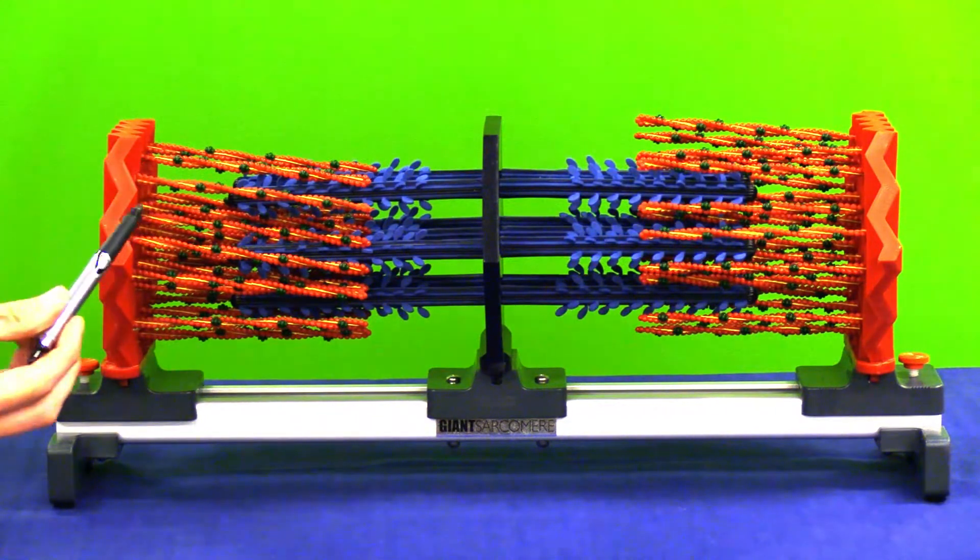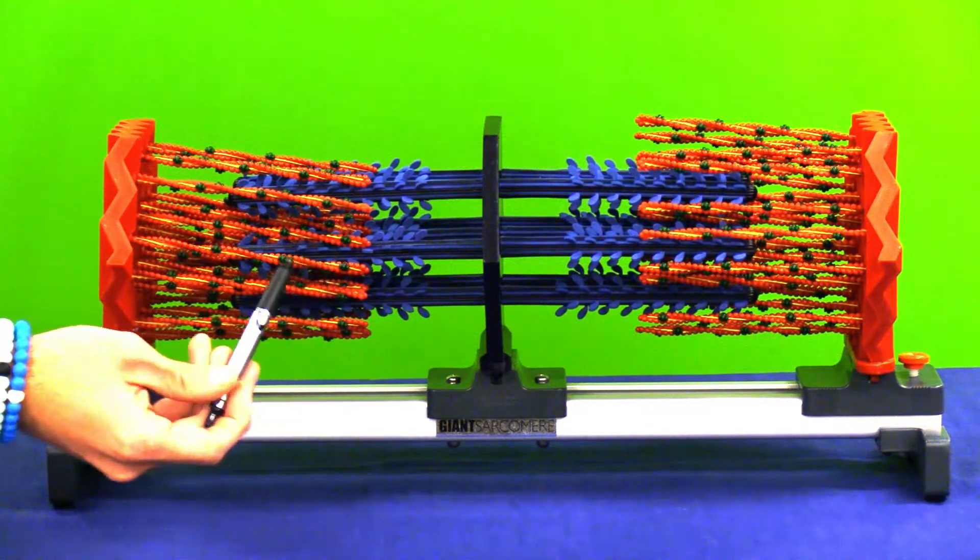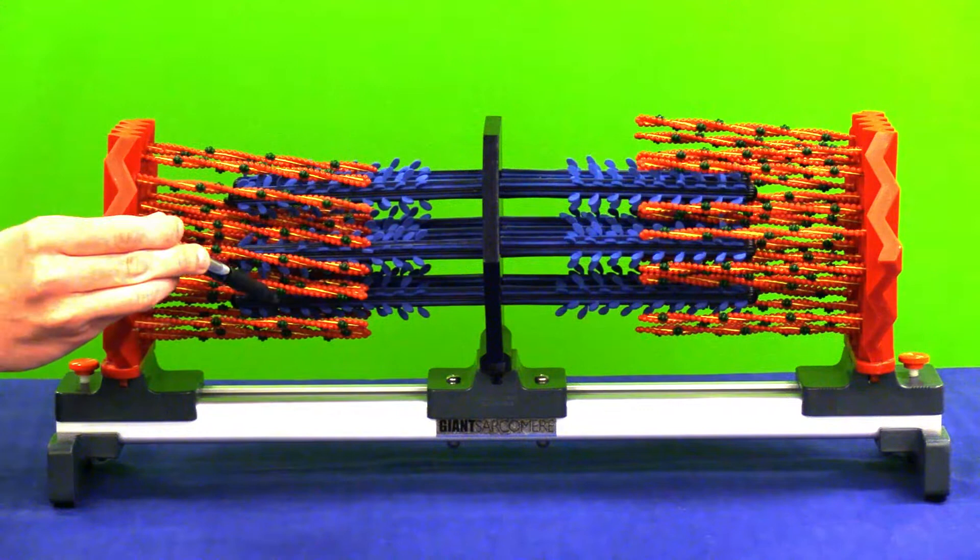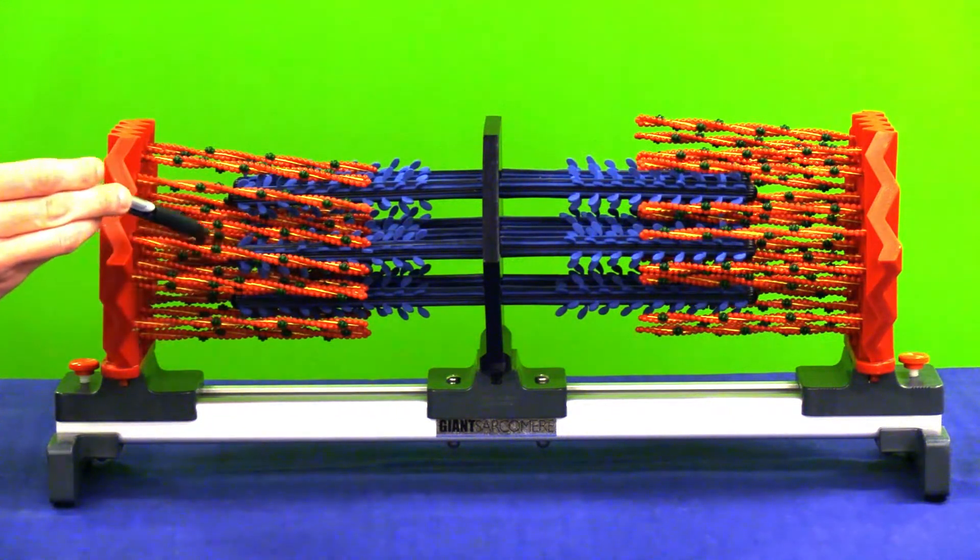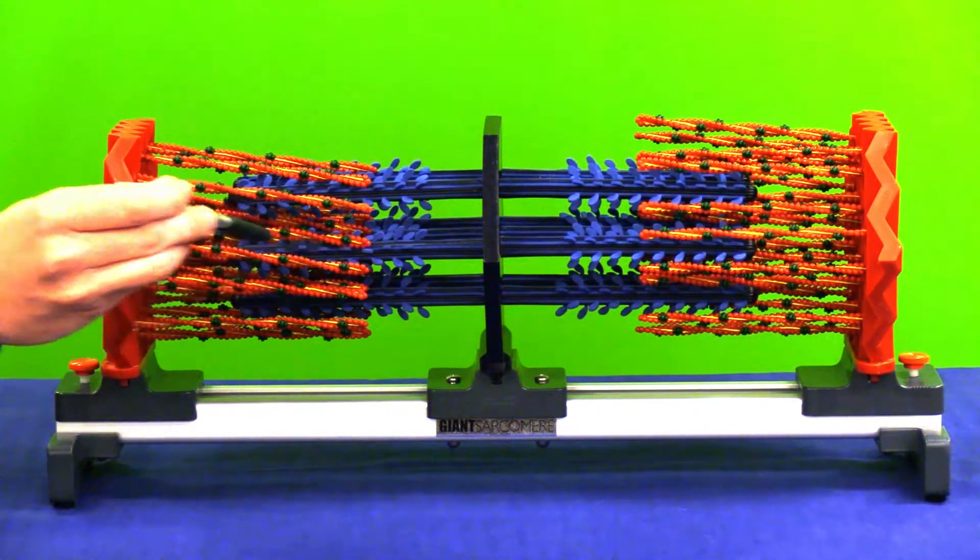If we look at the actin filament, there are a few more important areas to examine. These little black areas all over the actin filament are known as troponin complexes, and the yellow band that wraps its way around is the tropomyosin.